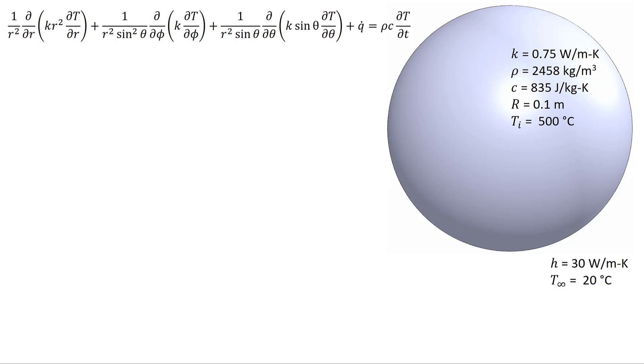In this problem we've got a hot sphere initially at a temperature of 500 degrees C, and it's immersed in an environment with a heat transfer coefficient of 30 watts per meter Kelvin and an ambient temperature of 20 degrees C. We know the material properties of the sphere: its thermal conductivity, density, and heat capacity, along with its radius of 0.1 meter.